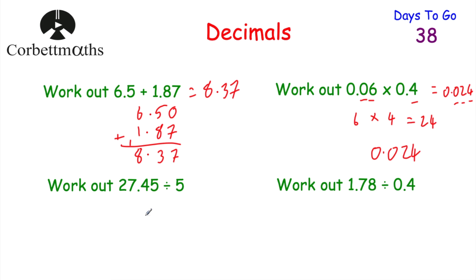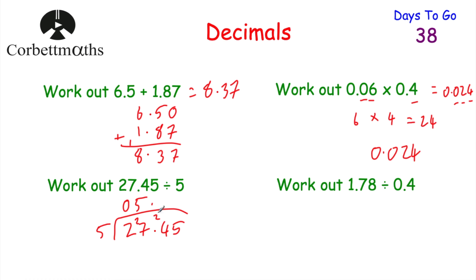Next, 27.45 divided by 5 using the bus shelter method. How many 5s go into 2? Zero remainder 2. How many 5s go into 27? Five remainder 2. How many 5s go into 24? Four remainder 4. How many 5s go into 45? Nine. So the answer is 5.49.